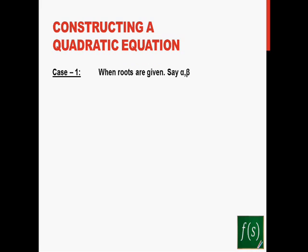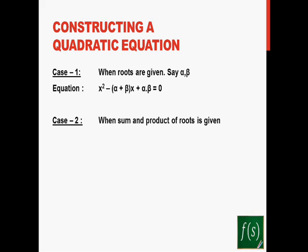Case one: when you have roots in hand. You are given that alpha and beta are the roots of a quadratic equation and you are asked to form it. It's very simple — the quadratic equation whose roots are alpha and beta is given by x squared minus (alpha plus beta)x plus alpha·beta equals zero.